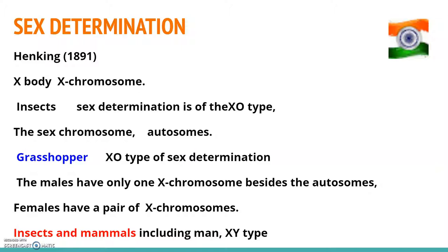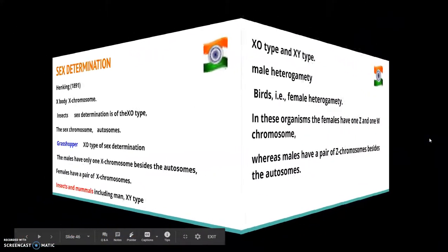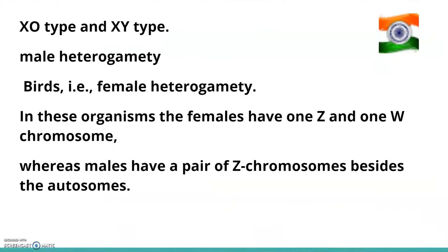A number of insects and mammals, including humans, have XY type of sex determination. Both males and females have the same number of chromosomes. Among males, an X chromosome and a Y chromosome are present, while females have a pair of X chromosomes. Males have autosomes plus XY while females have autosomes plus XX. In human beings and in Drosophila, males have one X and one Y chromosome, whereas females have a pair of X chromosomes besides autosomes.